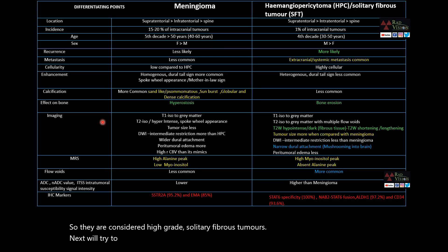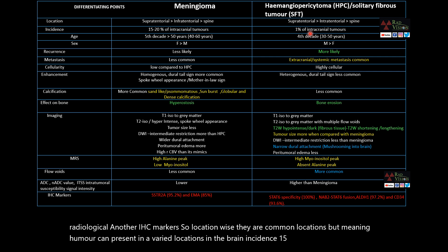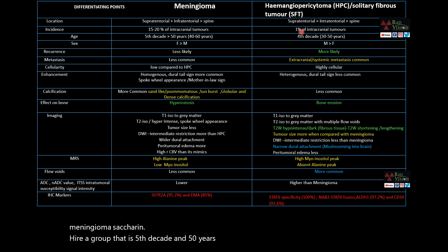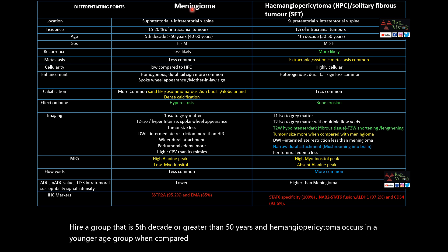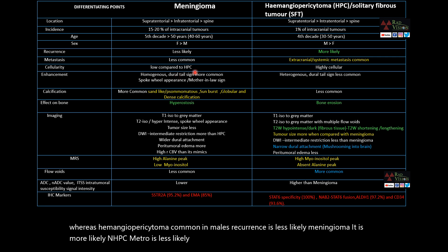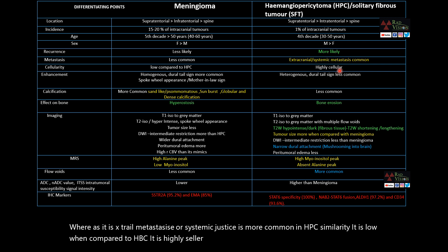We will now differentiate meningioma from hemangiopericytoma based on clinical, radiological, and IHC markers. Location-wise they share common sites, but meningioma presents in more varied locations. Meningioma incidence is 15–20% versus HPC at 1%. Meningiomas occur in older patients (5th decade, >50 years), while HPC occurs in younger patients. Meningiomas are more common in females; HPC is more common in males. Recurrence and extracranial metastasis are more likely in HPC. HPC is highly cellular. Homogeneous dural tail signs are common in meningioma; HPC shows heterogeneous enhancement, multiple flow voids, and less commonly a dural tail sign. Calcifications (psammomatous, sunburst, globular, dense) are more common in meningioma.